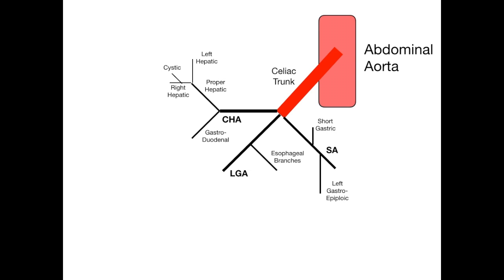At this point we've covered the three major branches off the celiac trunk: the common hepatic, the left gastric, and the splenic. Each gave rise to several downstream arteries going to different end organs. Now we need to discuss the strong anastomoses — connections — between different branches in this system.